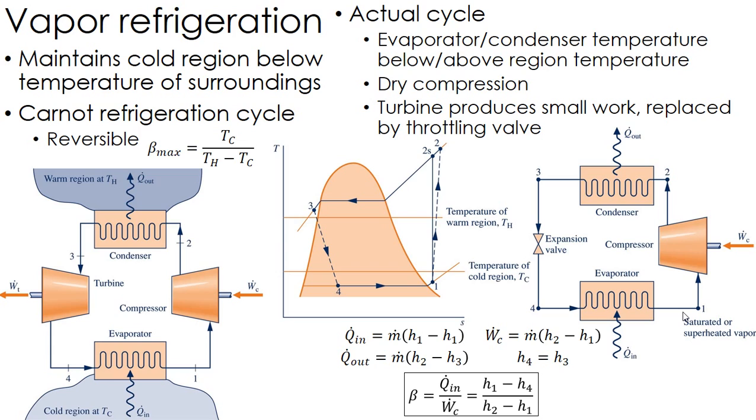So this is the actual vapor refrigeration cycle that we use. The compressor and expansion valve, dry compression rather than everything under the vapor dome with the turbine, things of that nature. And remember, I do have to have that temperature change in order to get Q in and Q out.